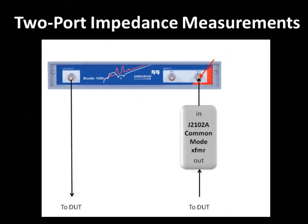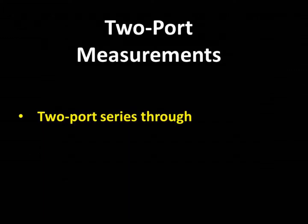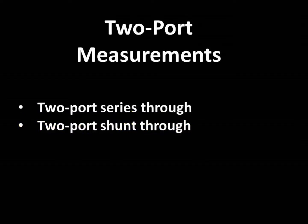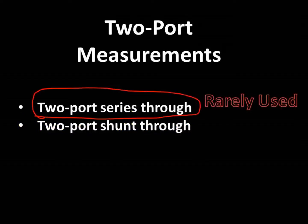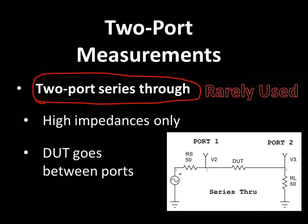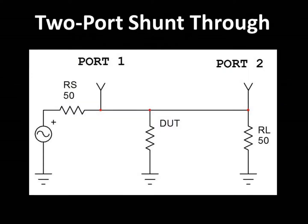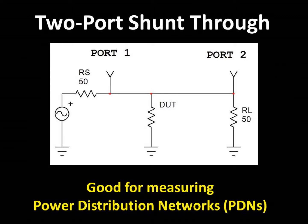In this presentation, I'll describe how to perform and interpret two-port impedance measurements using VNAs. There are two variations of the two-port measurement: the two-port series-through and the two-port shunt-through. We rarely use the series-through measurement and never in-system, because it's only useful for measuring high impedances and requires the DUT, or device under test, to be placed between the two measurement ports. So in this video, we'll focus on the two-port shunt-through measurement, which is the gold standard of measurement, especially for PDN, or power distribution network type applications, such as CPUs and FPGAs.